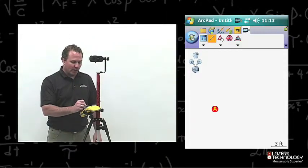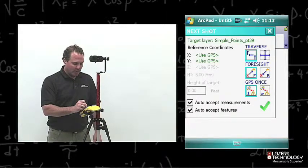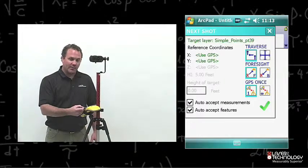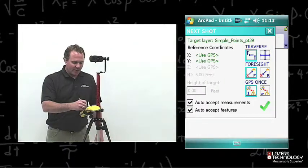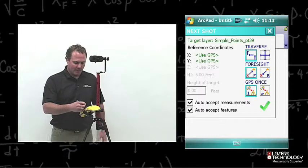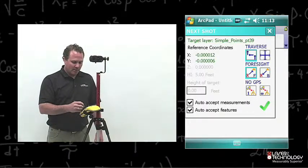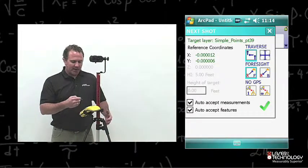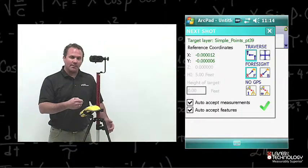Next thing I want to do is I want to go to my next dialog box. Choose the bullseye icon to bring up the dialog box and verify a few things. I want to verify we've got a traverse, a foresight, and we're going to choose GPS off. I'm happy with my measurements I've been taking, so I'm going to auto-accept my measurements.